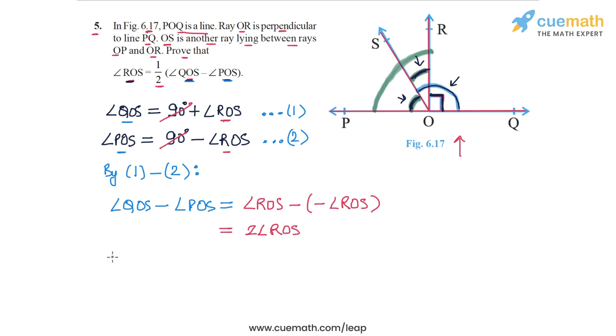Now I can write an expression for angle ROS. I just have to divide by 2 on the other side. So angle ROS equals half of the difference: angle QOS minus angle POS.